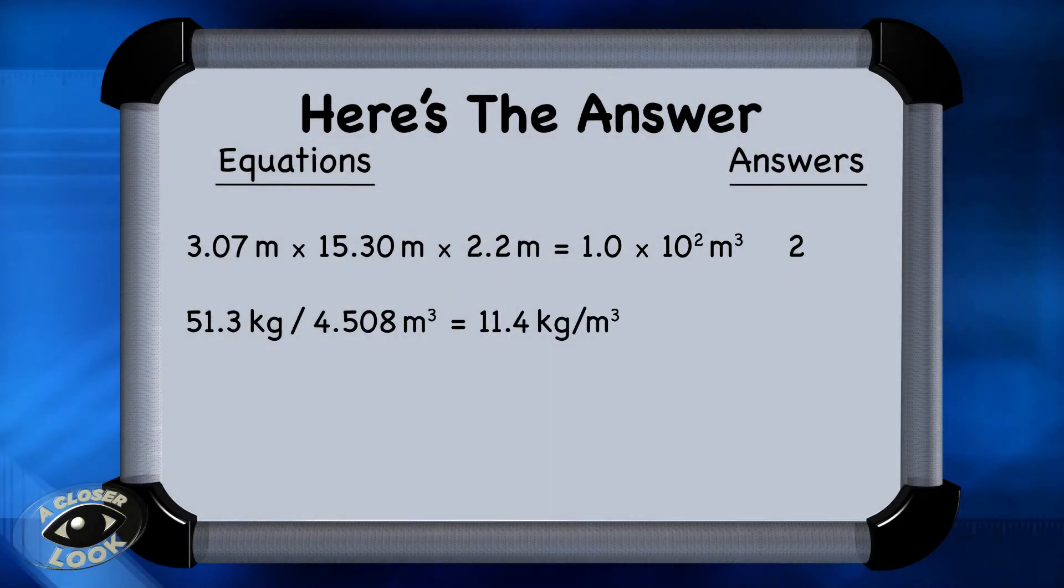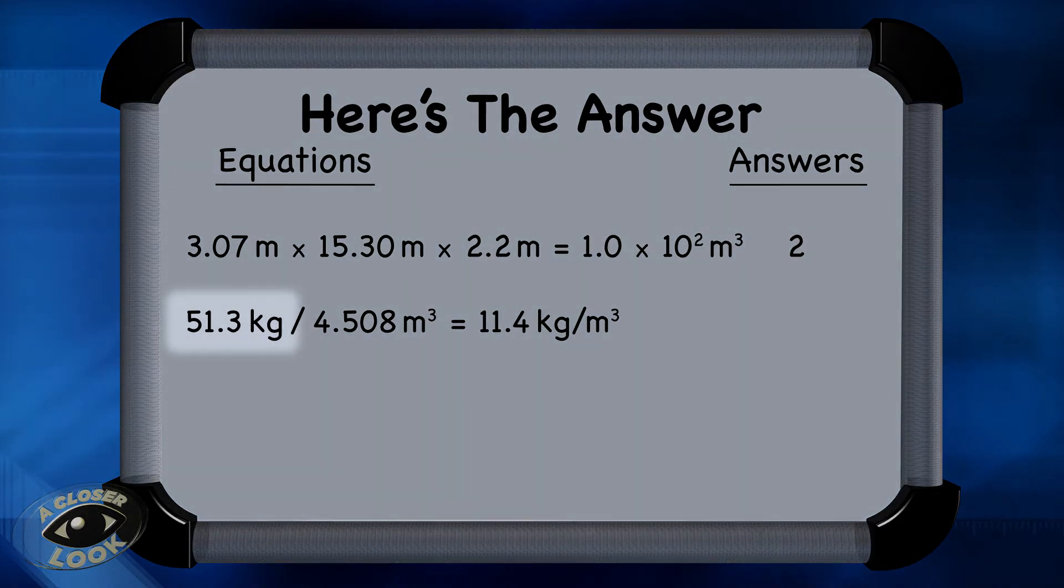The second problem is a division problem, which has the same rules as multiplication. 51.3 has the smallest number of sig figs of the values listed to begin with, 3 sig figs. And so the final answer has to have 3 sig figs, which 11.4 has. And again, the units were divided just like the numbers were, and that's how we got kilograms per cubic meter.